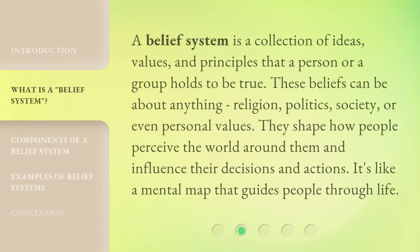A belief system is a collection of ideas, values, and principles that a person or a group holds to be true. These beliefs can be about anything — religion, politics, society, or even personal values. They shape how people perceive the world around them and influence their decisions and actions. It's like a mental map that guides people through life.